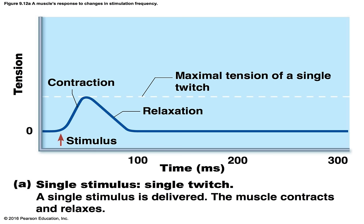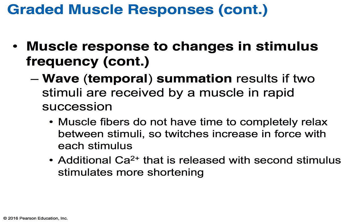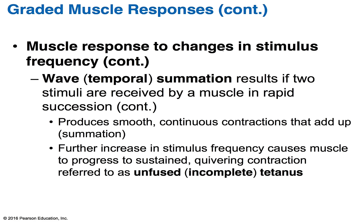When you have a single stimulus, you get a contraction followed by relaxation. During EC coupling, tension is generated and you have the contraction; then during relaxation, calcium is sent back to the sarcoplasmic reticulum and eventually you have zero tension — the relaxed state. In wave summation, or temporal summation, two stimuli are received by a muscle in rapid succession. The muscle fibers don't have time to completely relax between the stimuli, so the twitches increase in force with each stimulus. Additional calcium released with the second stimulus stimulates more shortening, producing a smooth continuous contraction — that's why it's called summation.